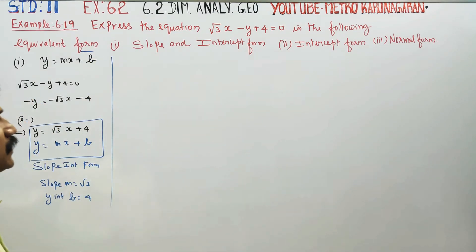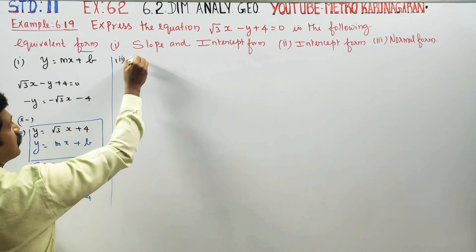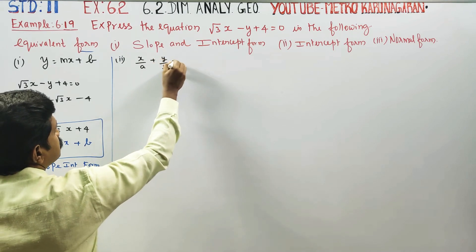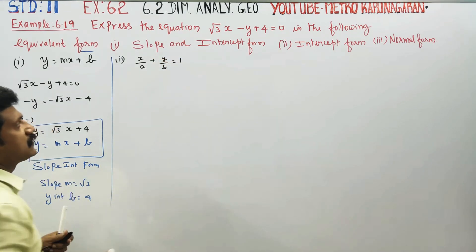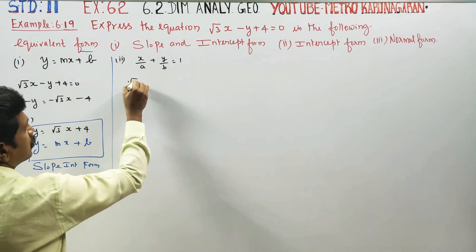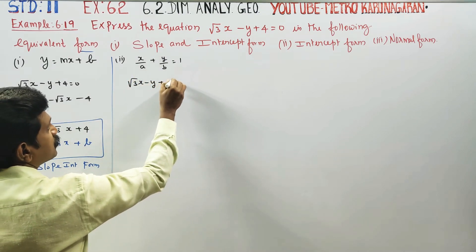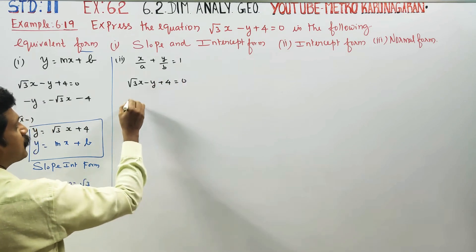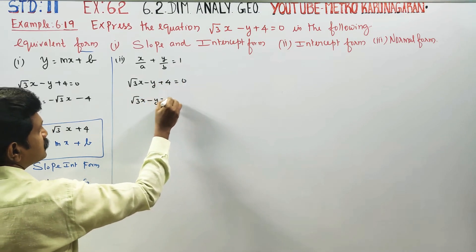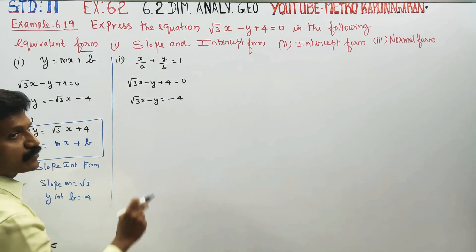Next, intercept form. The intercept form is in the style x by a plus y by b is equal to 1. The equation is root 3x minus y plus 4 is equal to 0. Moving the constant: root 3x minus y is equal to minus 4. The intercept form requires the right-hand side to equal 1.